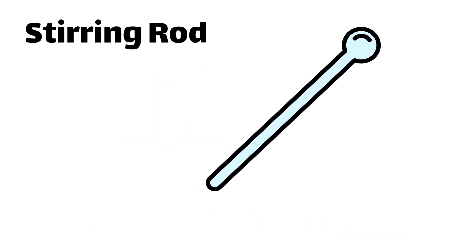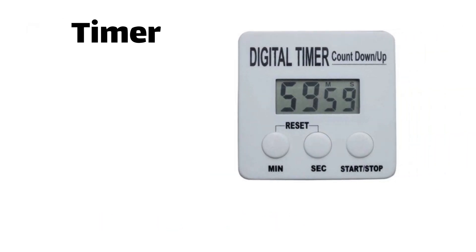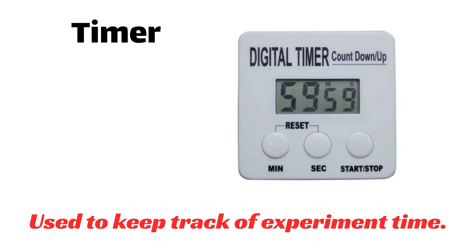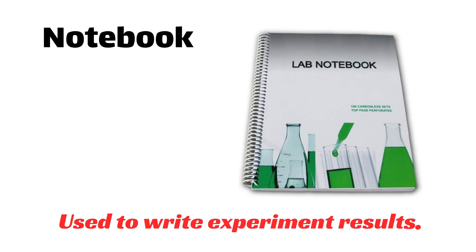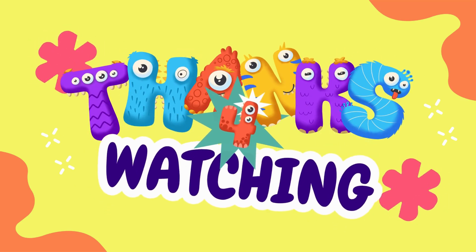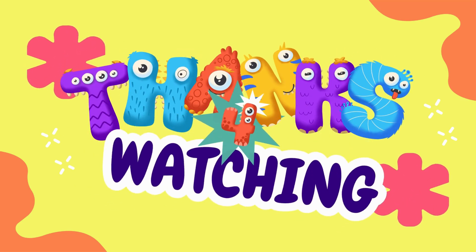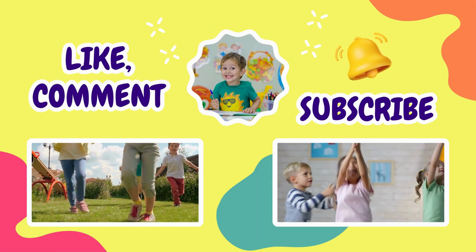Stirring rod — used to mix liquids. Timer — used to keep track of experiment time. Notebook — used to write experiment results.